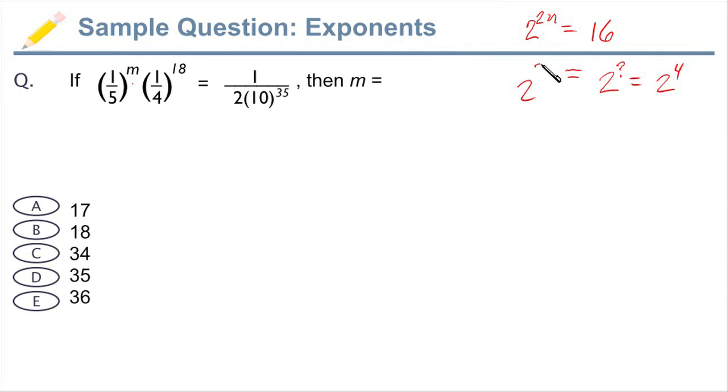The left side is 2 to the 2n. And by definition, if those two things are going to be equal, then 2n must equal 4. So we have 2n equals 4 in that case because the bases are the same. And then it's easy to solve that n equals 2. So that's obviously an easier version of this question, but we essentially want to do the same thing.